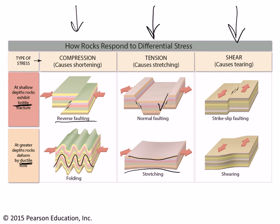The last possibility is shear, which is when we have lateral movement of blocks of rock parallel to the Earth's surface, neither up nor down. If the rocks are behaving brittlely, that produces strike-slip faults. If the rock is behaving ductilely, then we end up getting shearing in this zone, and we'll develop special rocks called mylonites.